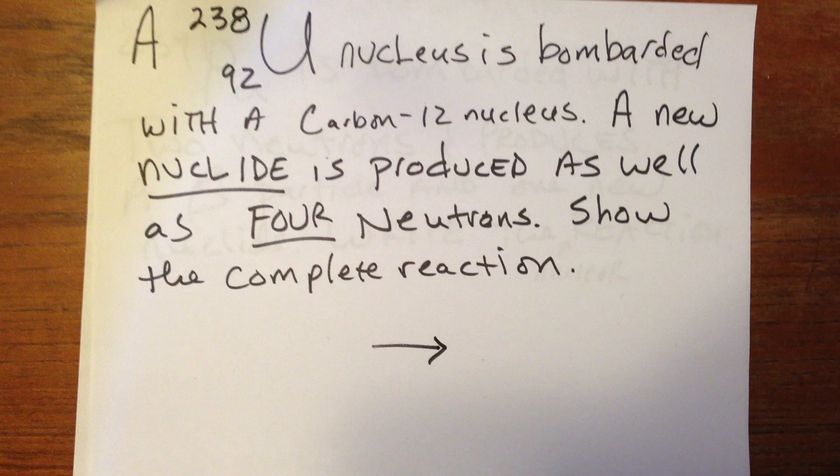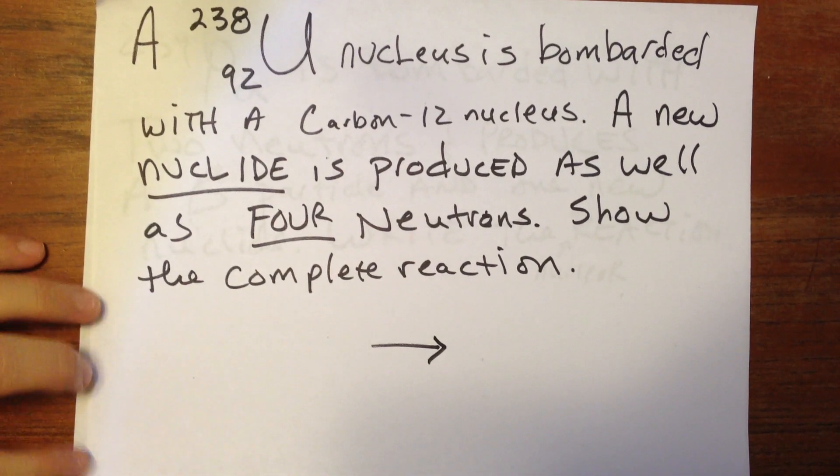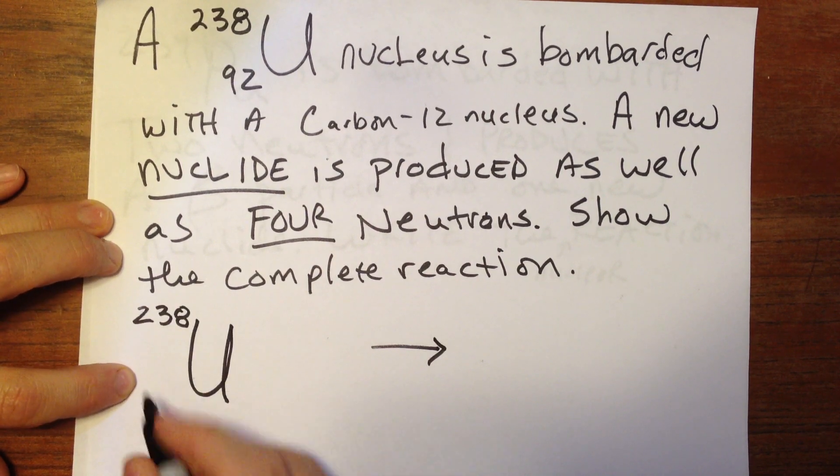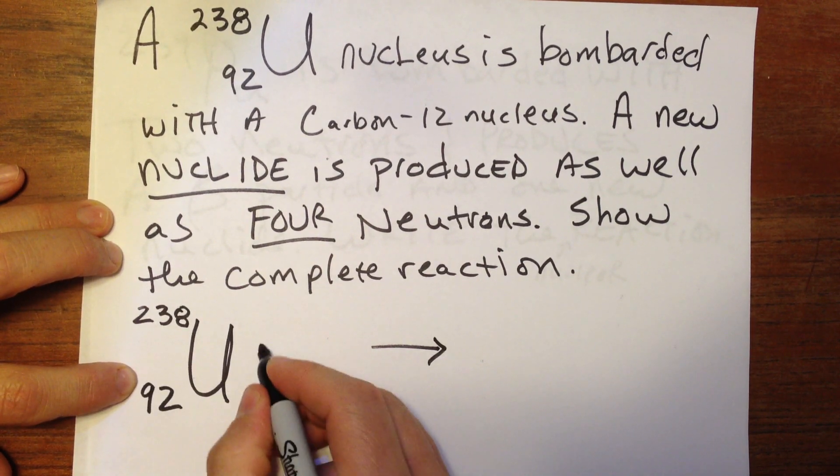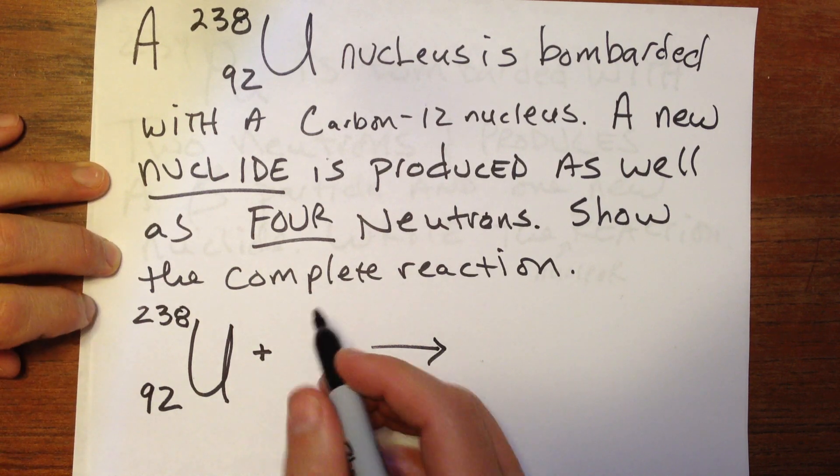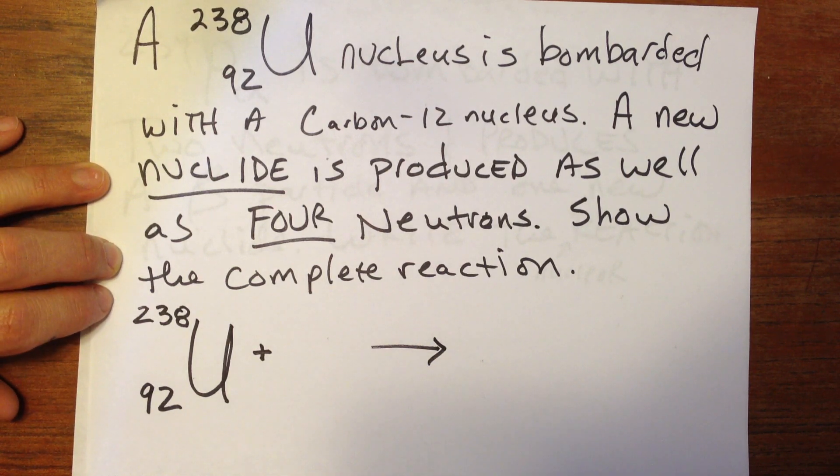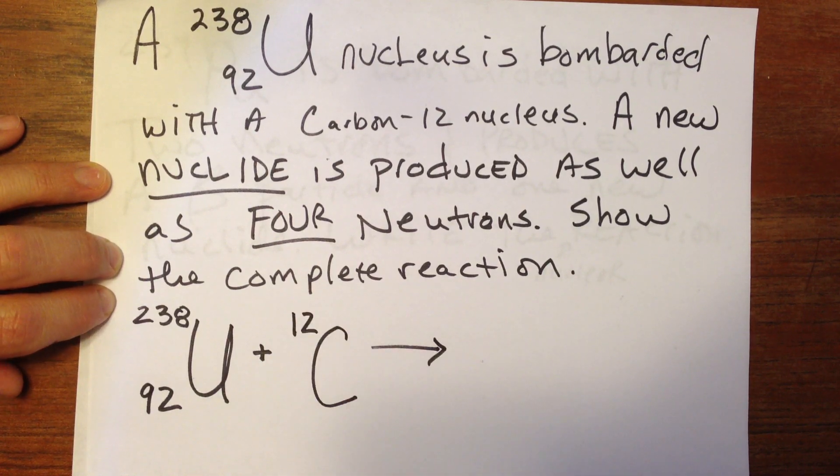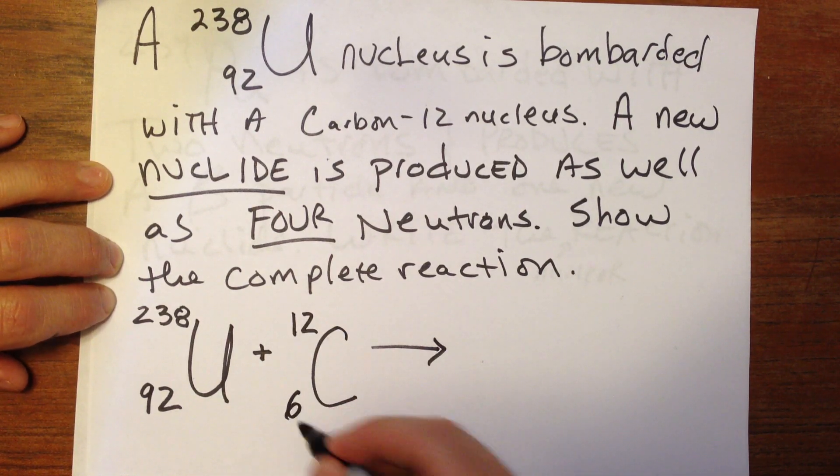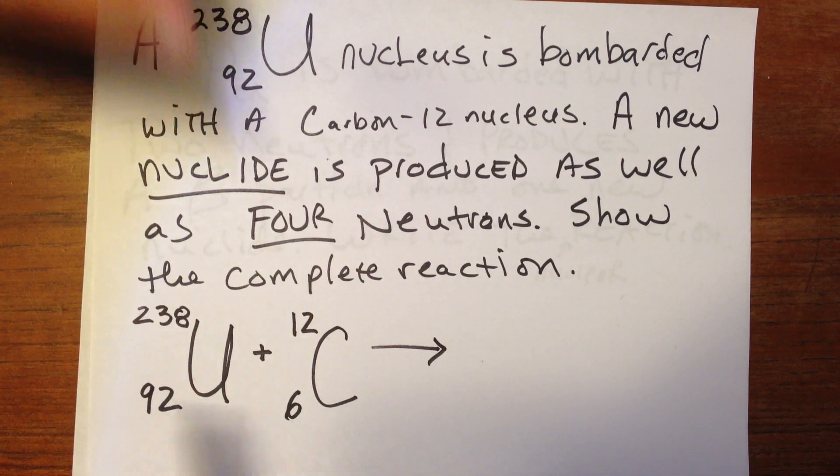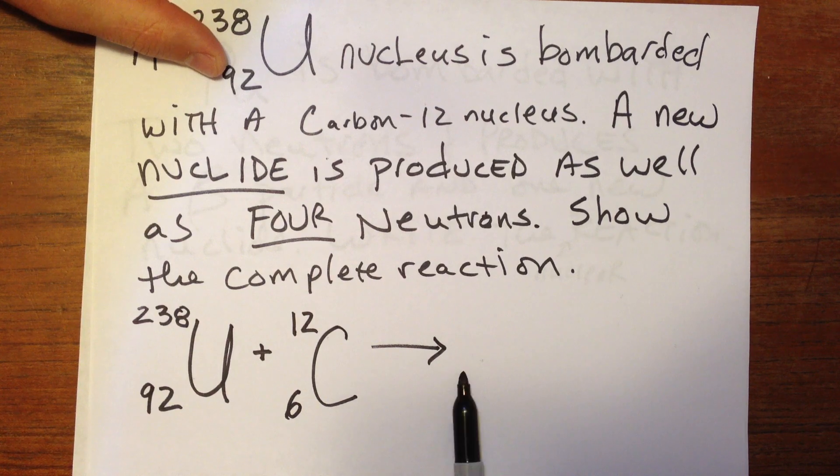And so we are going to start with U-238. And that's number 92. And this time we're going to add to it. We're going to hit it with a carbon-12 nucleus. Well, what's carbon-12? Well, it's carbon. And 12 is the mass number. And we know that carbon has six protons. So that's what we're starting with. We're going to bombard. We're going to smash those two things together and see what happens.